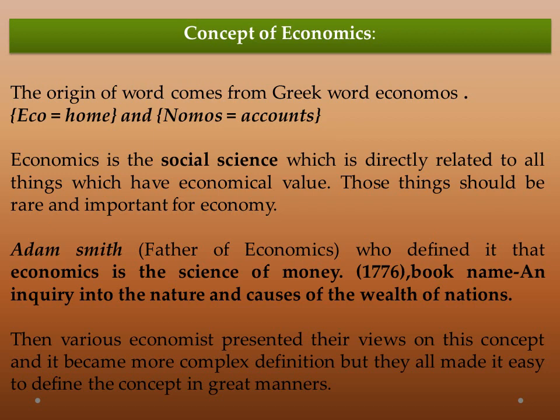Economics is called a social science because it studies social economic behavior. It is directly related to all things which have economic value — meaning non-economic values are not calculated here. Only economical things or goods have value, and those things must be rare and important for running the economy. Adam Smith, the father of economics, defined it as the science of money in his book An Inquiry into the Nature and Causes of the Wealth of Nations, published in 1776.